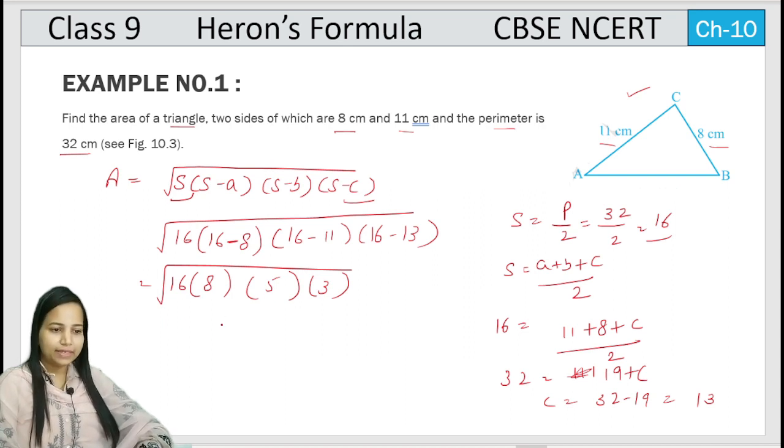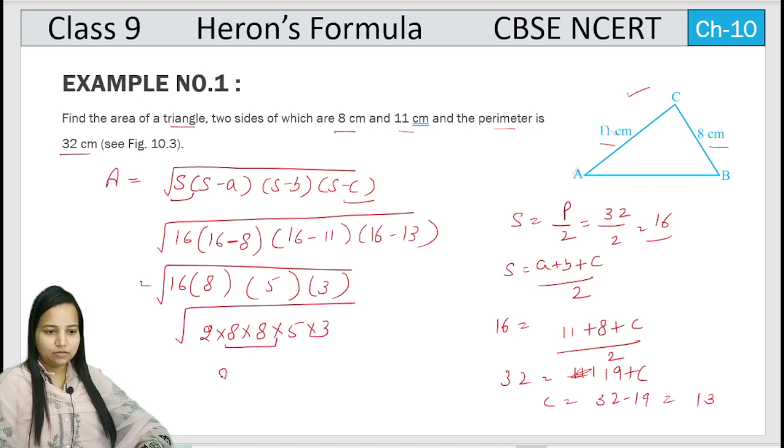Now we need to solve this again using factors. 16 can be written as 2 into 8, 8 is already 8, then 5 into 3. So here we have a pair of 8, we will take it out. Here what remains is 2 into 5 into 3. Further, these don't form any pairs.